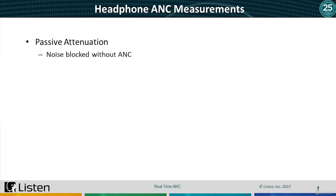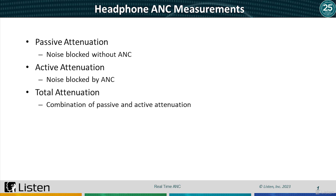Passive attenuation is the amount of noise the headphones block out without ANC enabled. Active attenuation is the amount of noise ANC blocks out. Total attenuation is the combination of the two measurements.